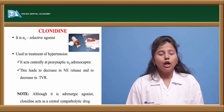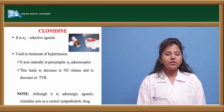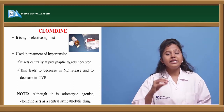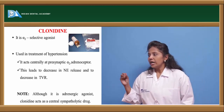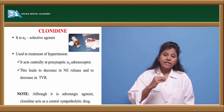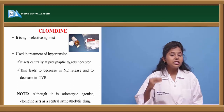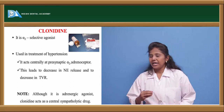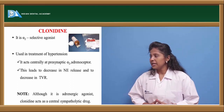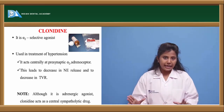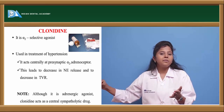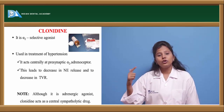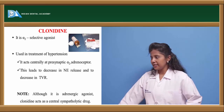Clonidine is a selective alpha-2 agonist. It is mainly used in the treatment of hypertension because when it binds to alpha-2 receptors, it causes vasodilation. It acts centrally at presynaptic alpha-2 receptors, binding directly to those receptors to exert its actions.